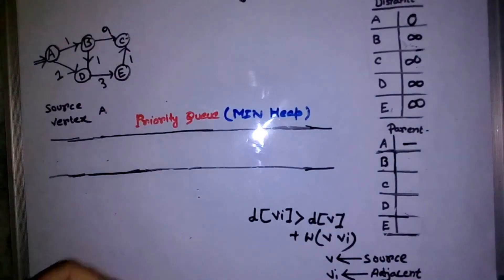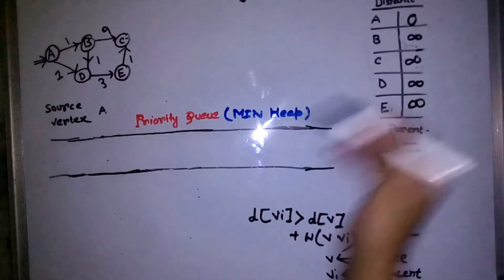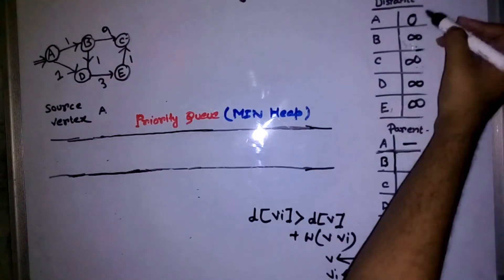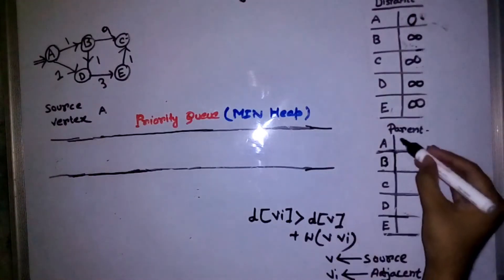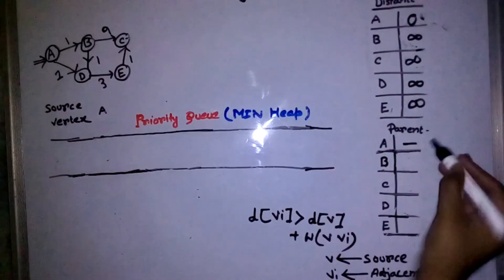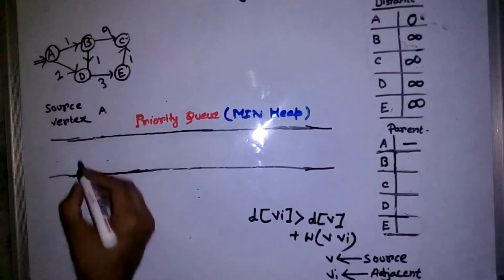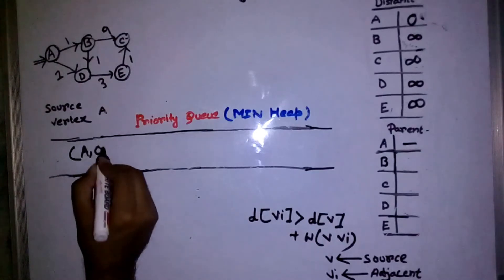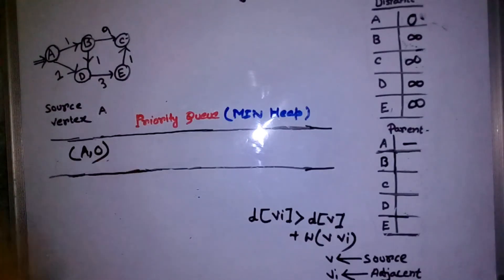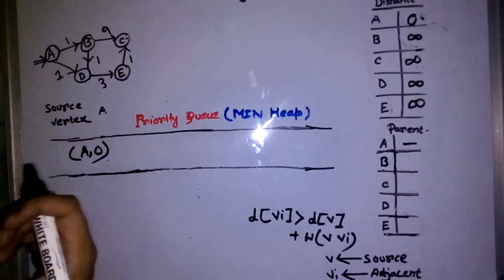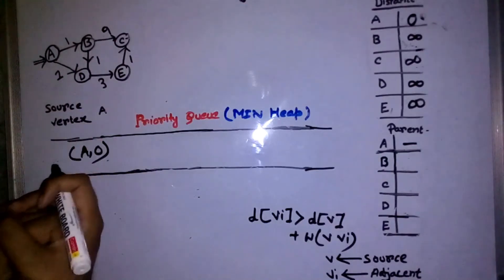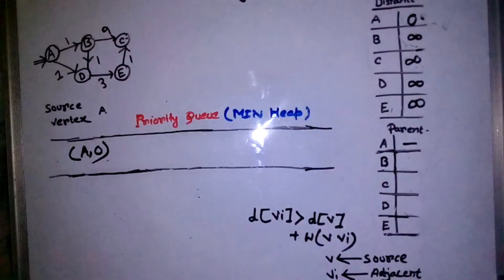Now let's apply Dijkstra's algorithm to our example graph. Initially, I have set all entries to infinity and all parents to null. The parent of the source vertex is nothing. First, I add the source vertex A to the priority queue with priority zero. From here, we keep extracting the minimum and checking all adjacent vertices of the extracted node, trying to update the two arrays.